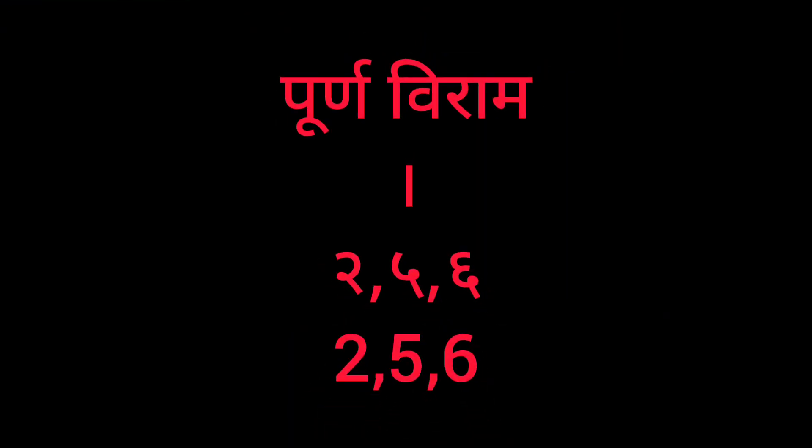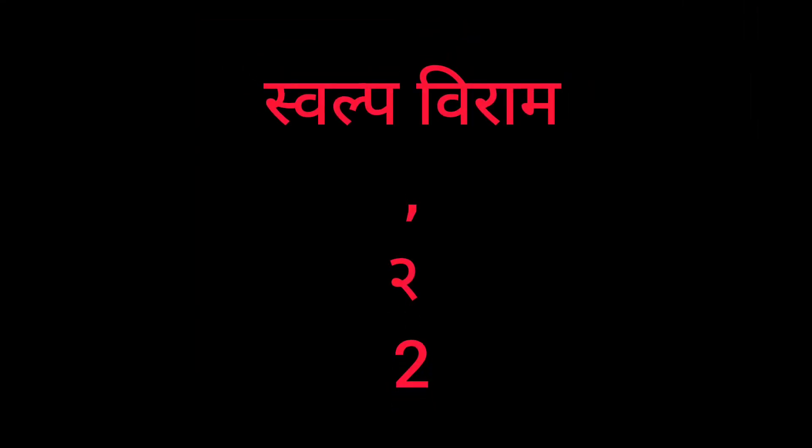The first punctuation mark is Punv Viram. We use Punv Viram at the end of a sentence — it is the full stop. The dot for Punv Viram is dot 2-5-6. Next, we use Ardhaviram. Ardhaviram means semicolon, and the semicolon dot is dot 2-3.